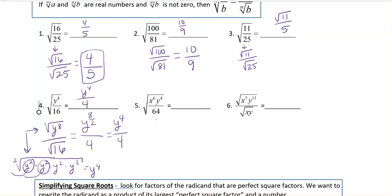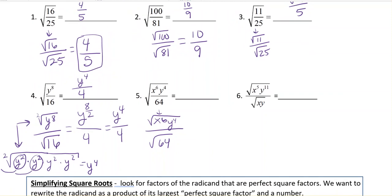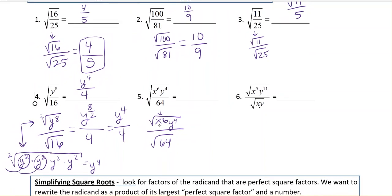So another example here. Again, first step, you want to split that radical. It helps you be able to see what's happening. Makes it a little bit clearer. So if you do x to the 6th, the square root of x to the 6th and the square root of y to the 4th,